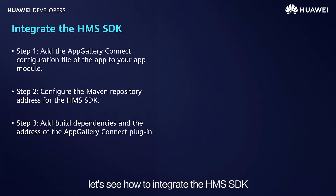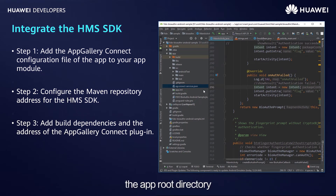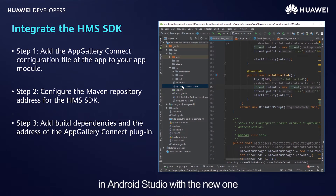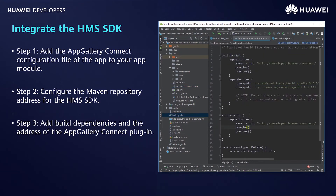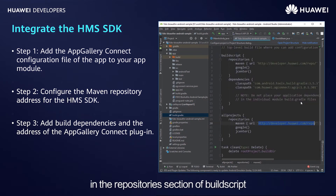Next, let's see how to integrate the HMS SDK. The first step is to open the created app and copy the agconnect-services.json file downloaded from AppGallery Connect to the app root directory. Note that if the app is modified in AppGallery Connect during development, you need to download the file again and overwrite the old file in Android Studio. The second step is to open the build.gradle file in the root directory. Find the resource repository section under all projects and add the Maven repository address of the HMS SDK.